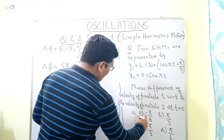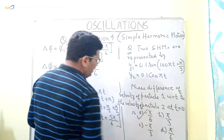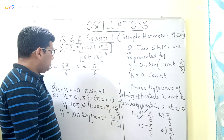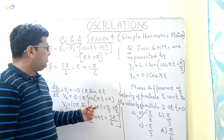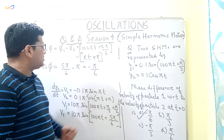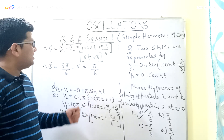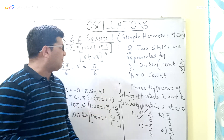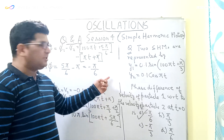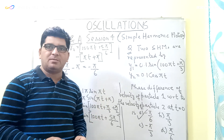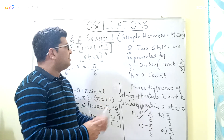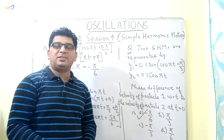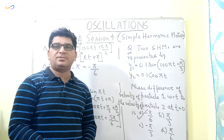So the correct option here is minus π/6. I think you must have understood the solution of this problem. In the next session, I will be coming up with a different type of question and the topic will remain the same, that is simple harmonic motion. Thank you very much for joining this session. Have a nice day. Bye.